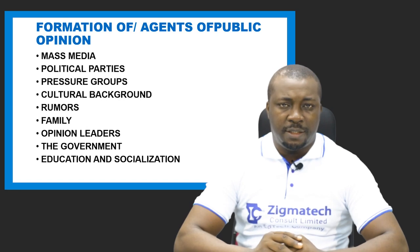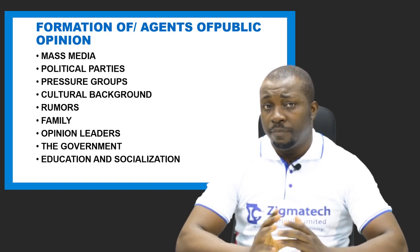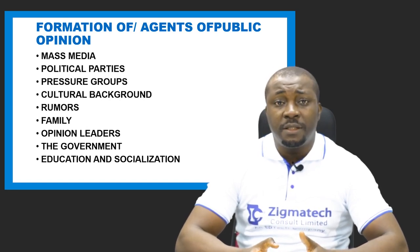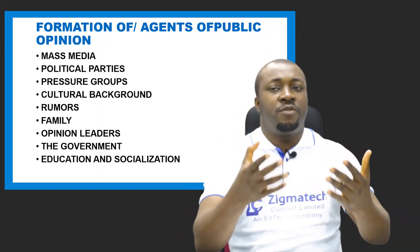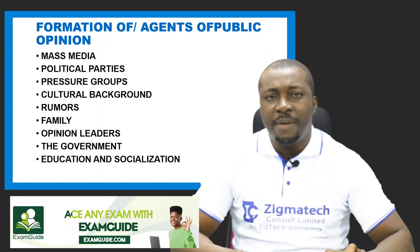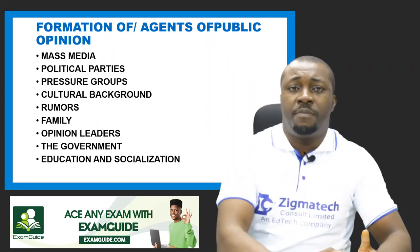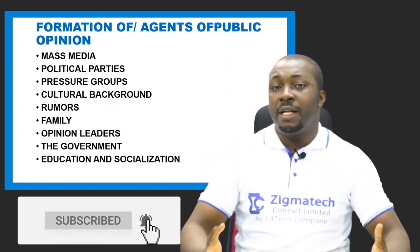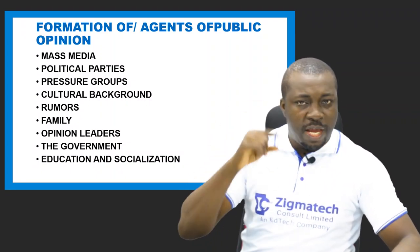Number two is political parties — organized groups of people that aim to form and control the government by contesting and winning elections. Political parties carry out debates on public matters through their campaigns and manifestos. What they say, what they tell people they are going to do, and how they approach public matters helps inform public opinion. Because they aim to win people's votes, they persuade people and help shape public opinion.